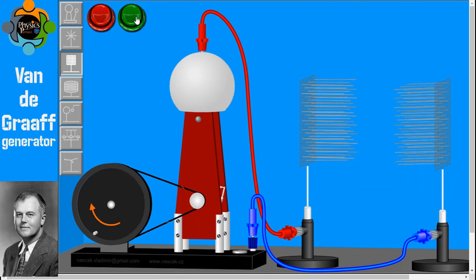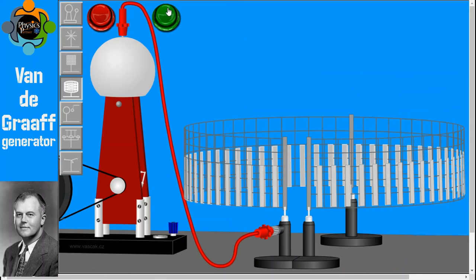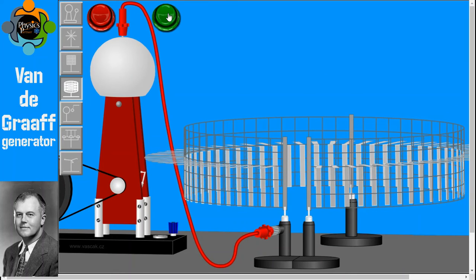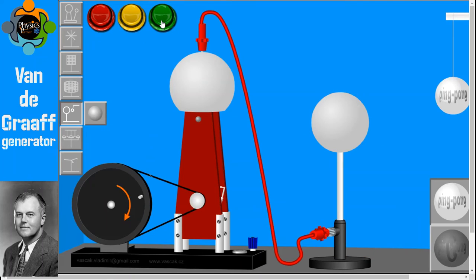Another way of demonstrating the Van de Graaff generator function, we can make the instrument setup like that also. When you switch on with the one negative charge, you can see they start repelling each other with this stand and the position is in front of you. Let's try a ping pong ball experiment.